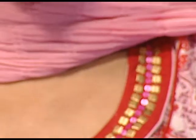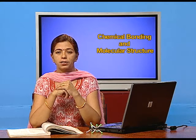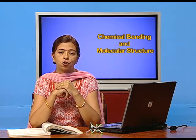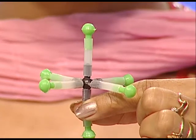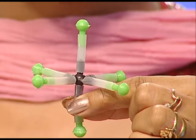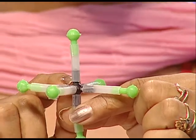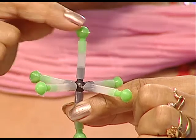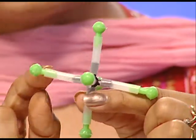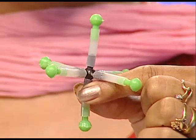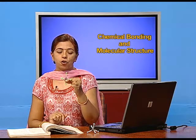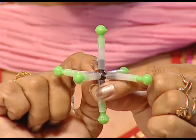The octet rule says there must be eight electrons around the central atom, but in PCl₅ there are ten electrons around the central atom. Another example is SF₆ — sulfur hexafluoride — where the sulfur atom is surrounded by six fluorine atoms forming six covalent bonds. Six covalent bonds means twelve electrons are surrounding the sulfur atom. Again, this is an exception to the octet rule.